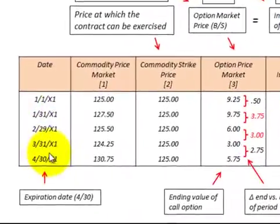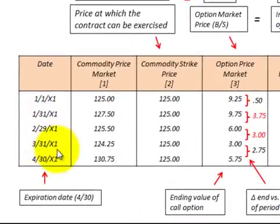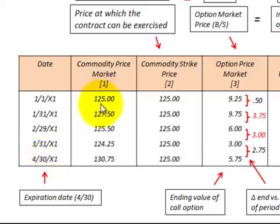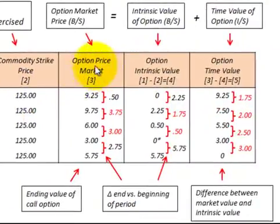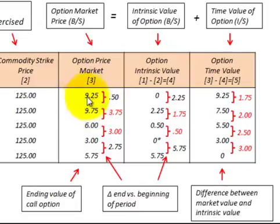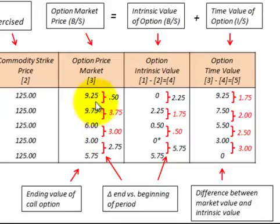For our example we'll go through each period without exercising this option. We'll start at the purchase date and go through the expiration date, given the change in commodity price for each period along with the commodity strike price. We need to determine the change between the beginning and end of each period. For example, we paid $9.25 for this option at the beginning of a period and at the end it was priced at $9.75, giving us a positive change of $0.50, indicated in black.